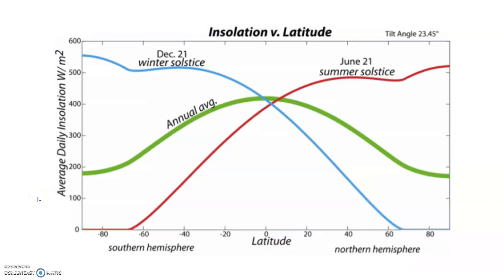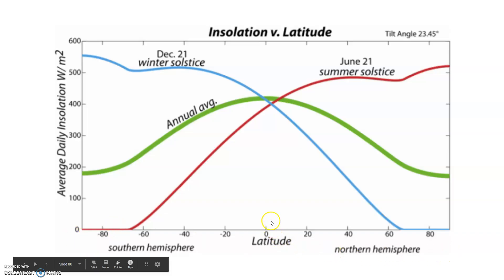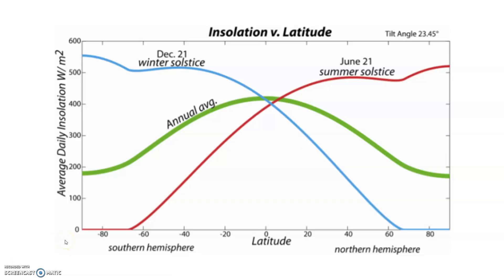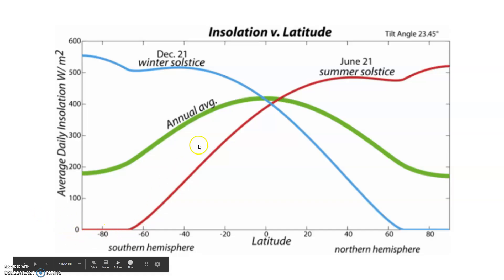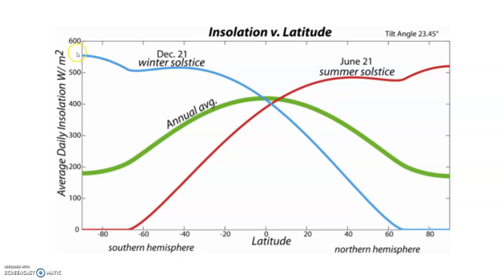This is a bit of a weird graph, so we'll just unpack it the best we can. On the x-axis, we have latitude — zero degrees is the equator. The southern hemisphere is down here and the northern hemisphere is up here, so the north pole is over on the right and the south pole is on the left. The red line shows how much insolation is being received at that latitude on June 21st and how much it's receiving on December 21st, which is the winter solstice.